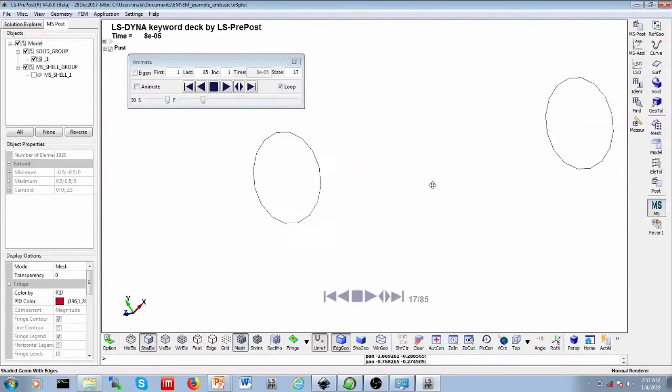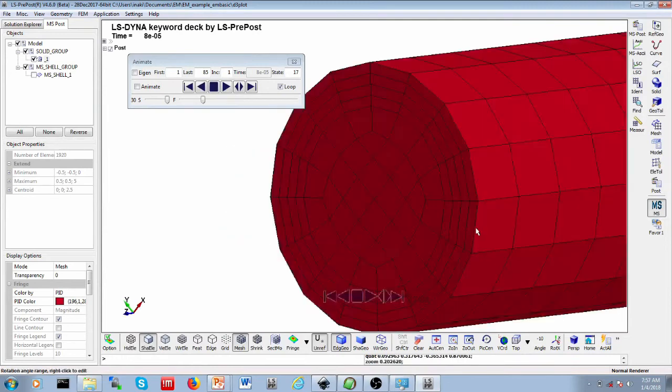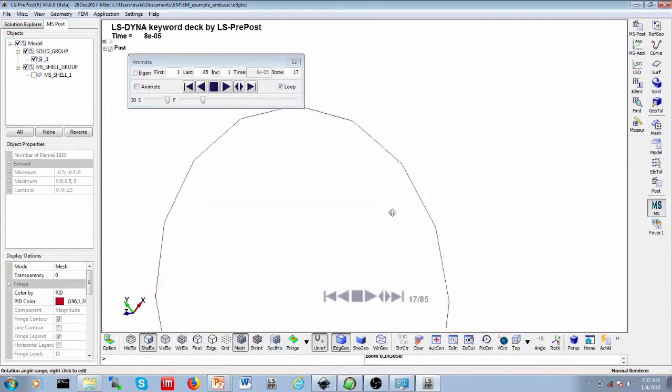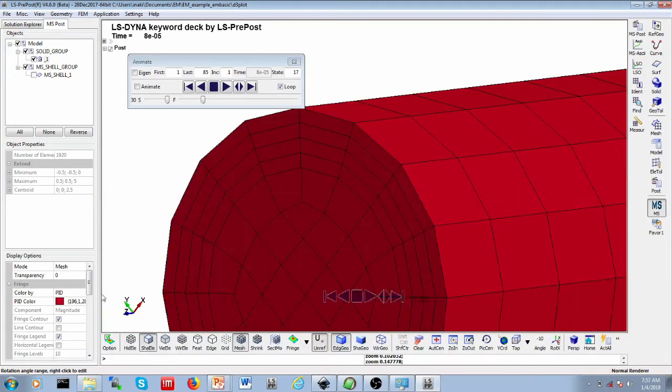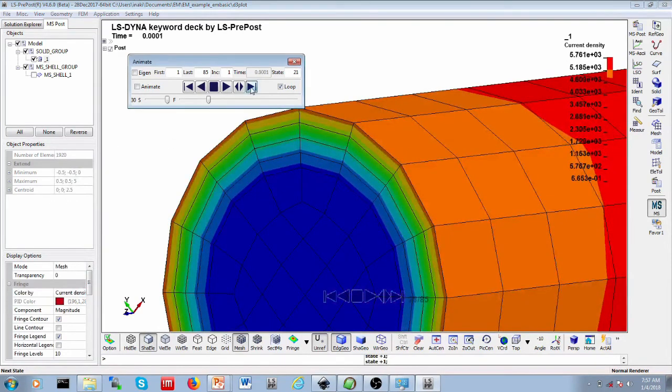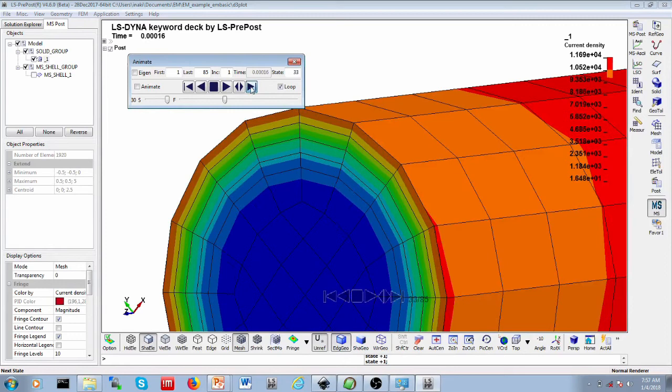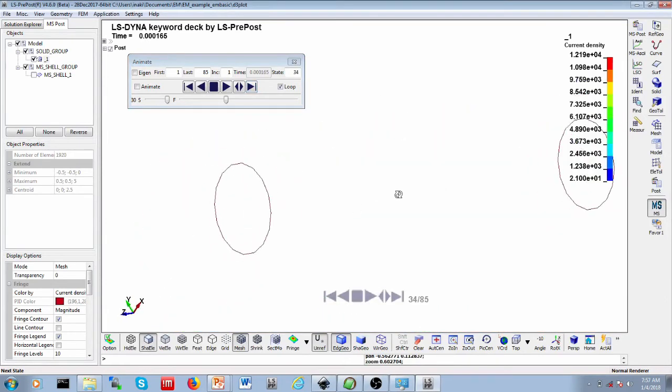Now if you go ahead and take another look at our rod example which we saw before, if you take a closer look at the mesh you will see that it's finer closer to the surface. And the reason being that's done on purpose. It's in order to correctly capture the diffusion of the current density through that thickness. This is what we saw before.